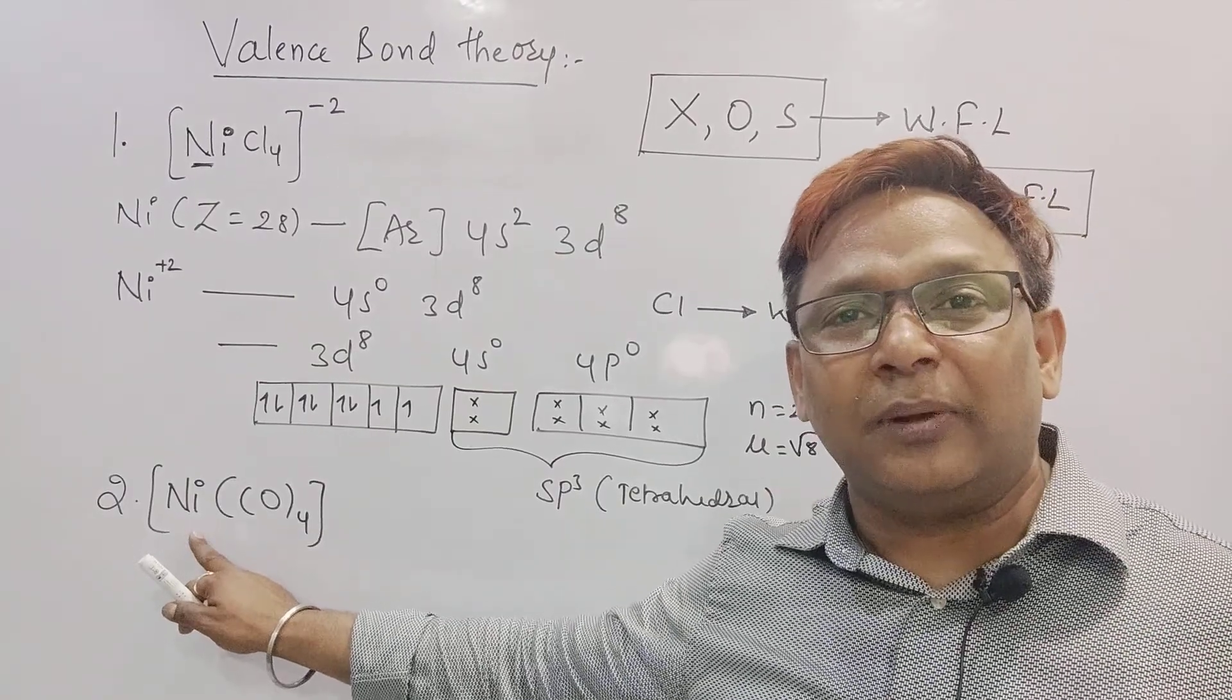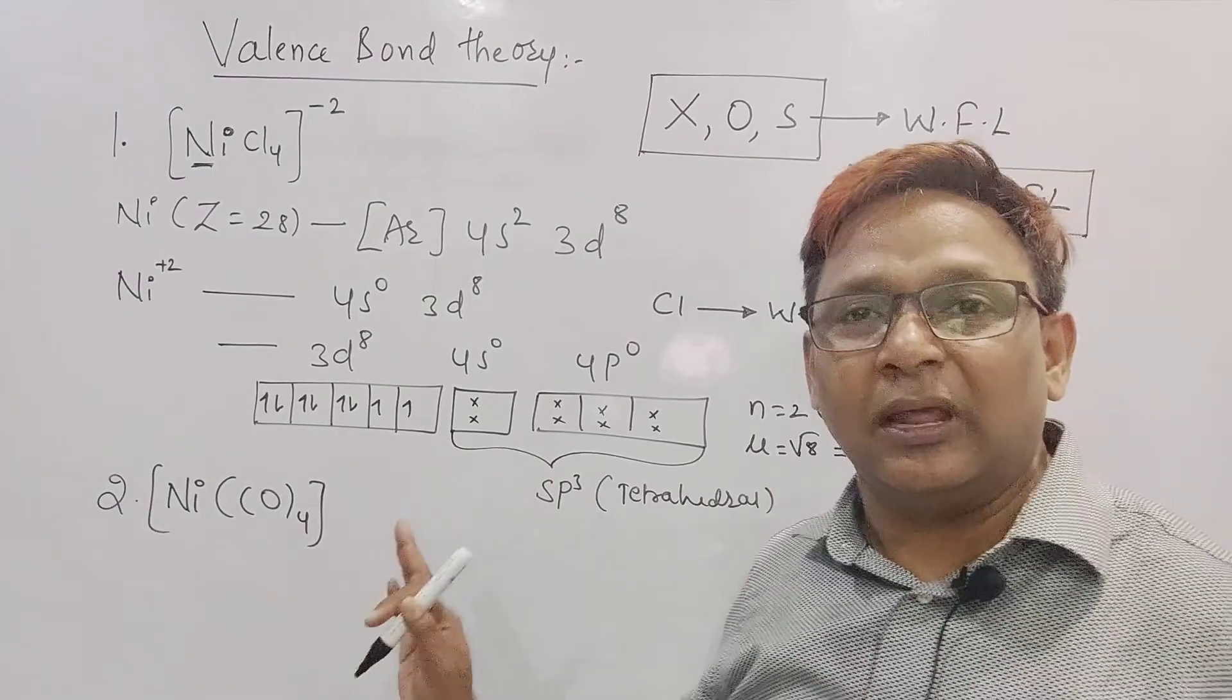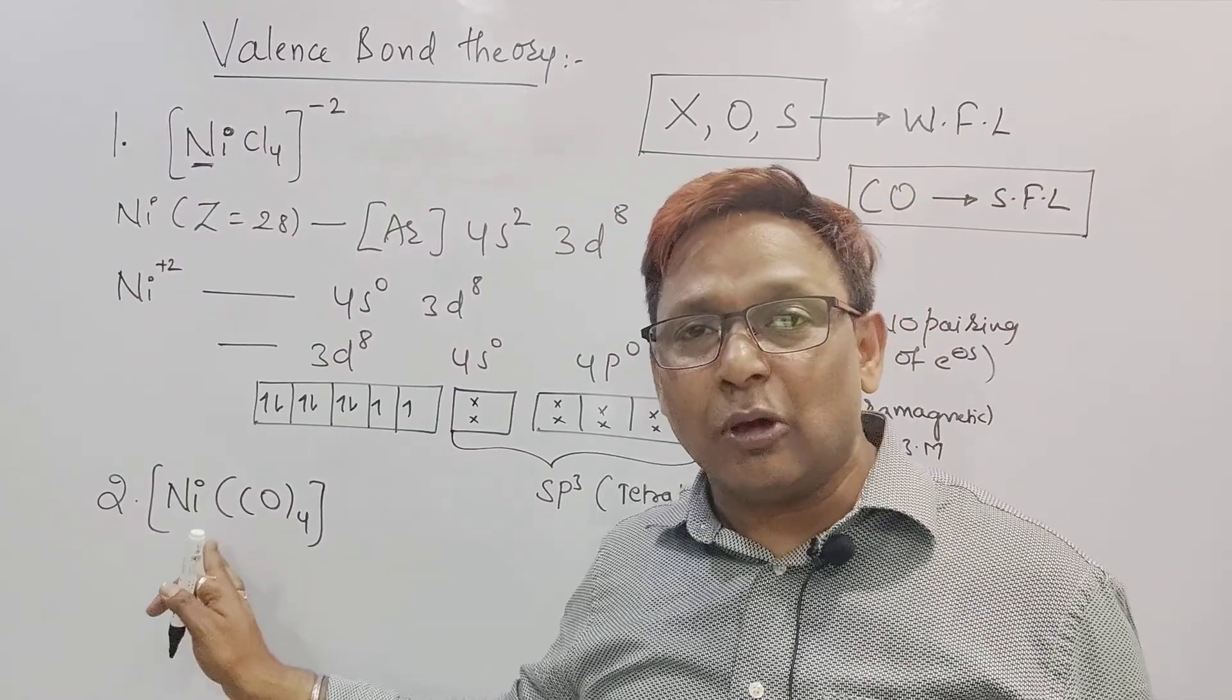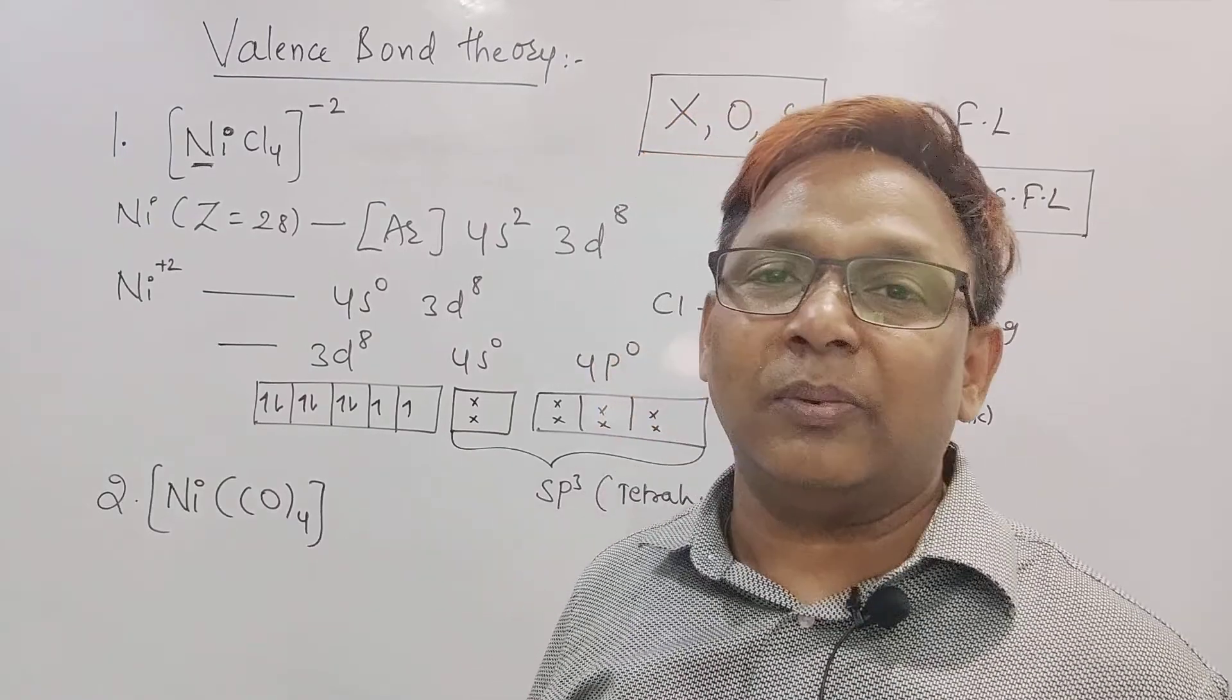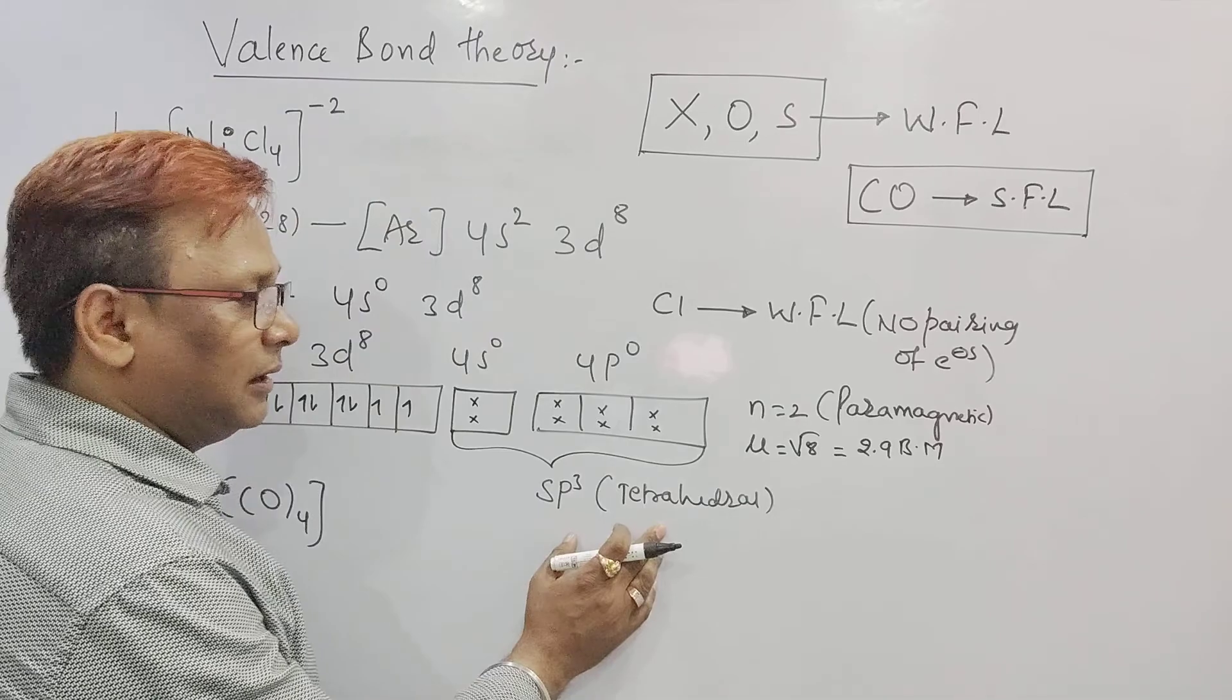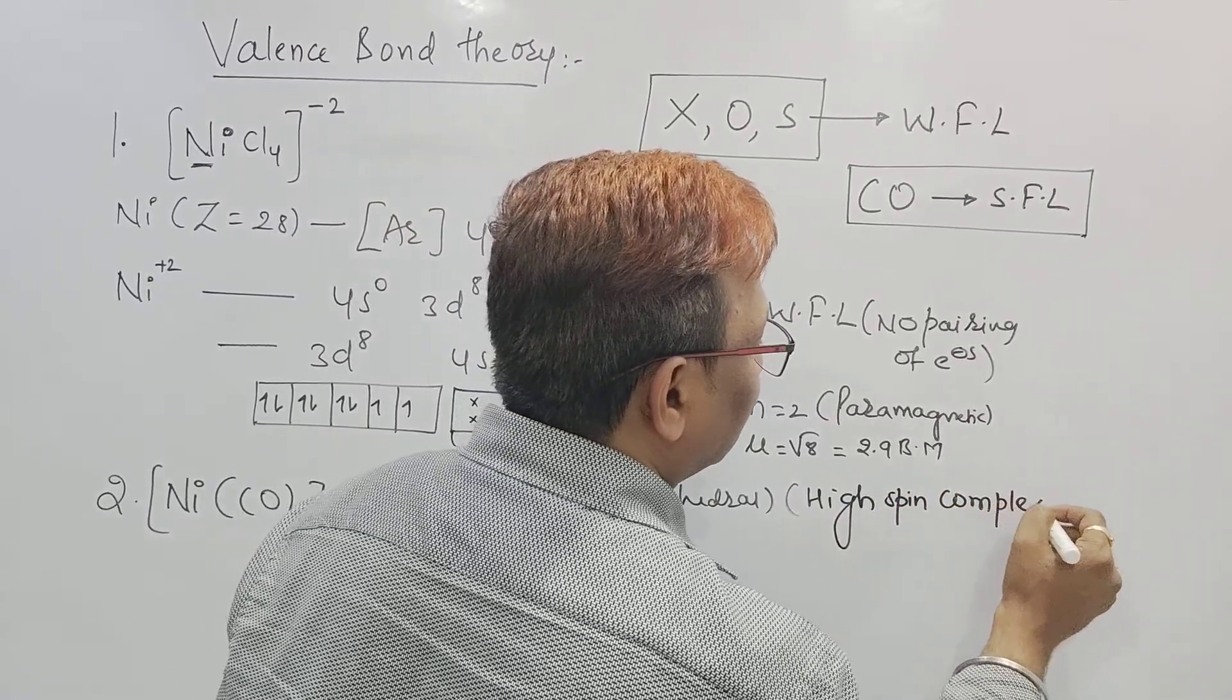And see whether it is an inner orbital complex or outer orbital complex. But I didn't want anything here because no d orbital involved. Neither inner orbital nor outer orbital involved. So I didn't want anything. Only I want to mention SP3 hybridization tetrahedral geometry. If nothing is involved you should say it is tetrahedral or other than that. No inner orbital involved. So you should call it as a high spin complex.